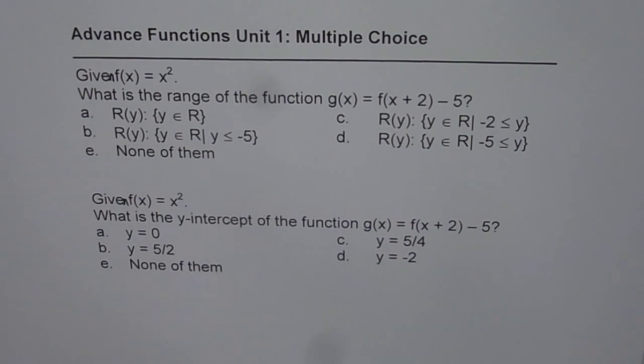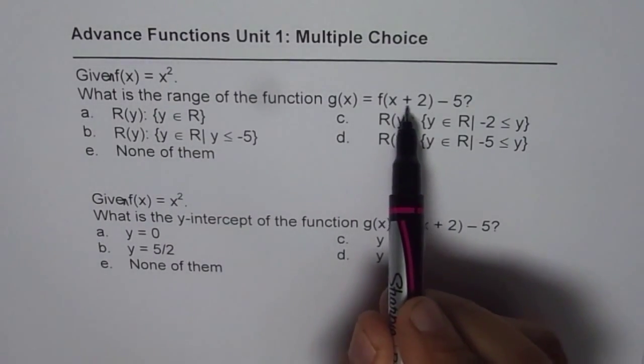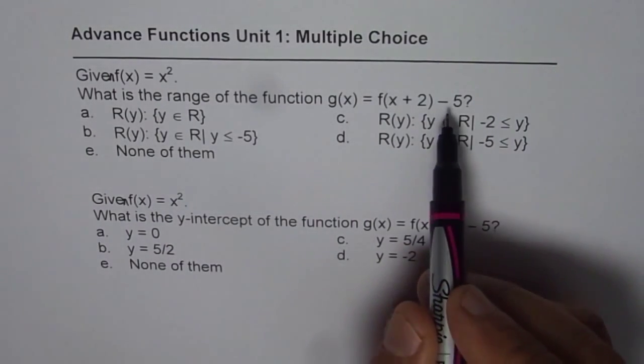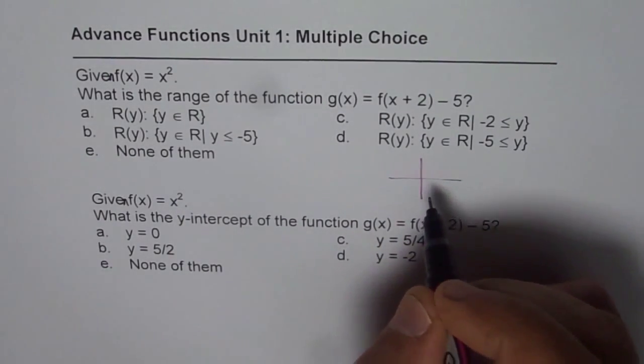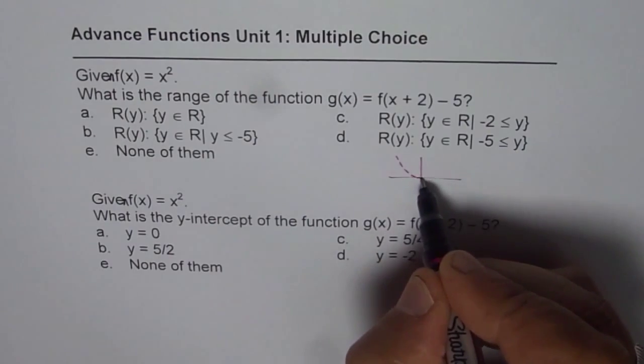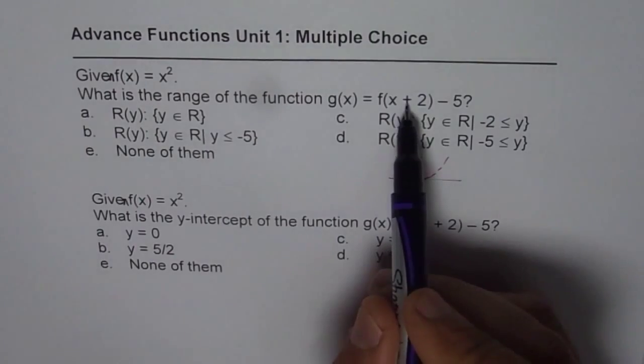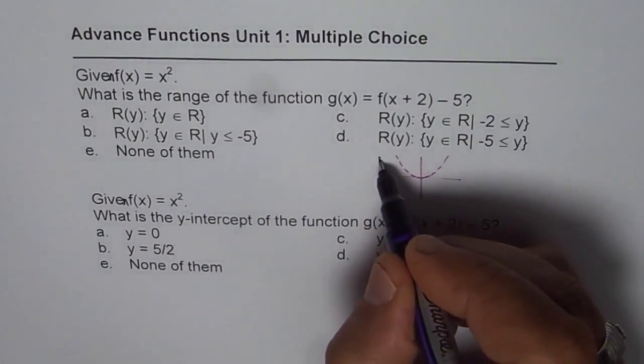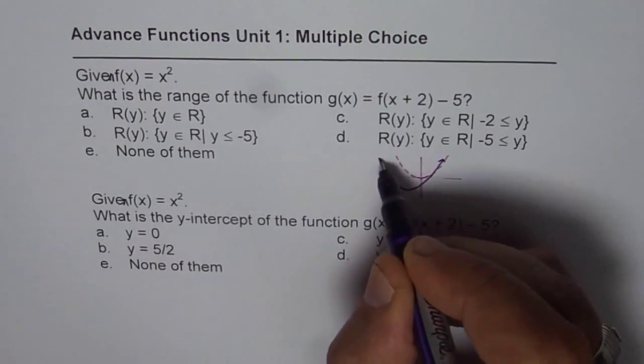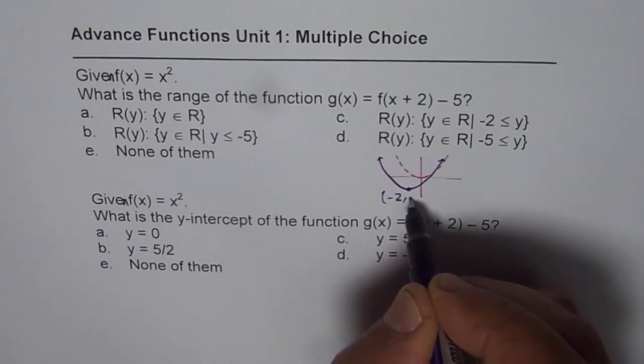So, let us start with the very first one. Here we'll use the transformation. f(x) is x², g(x) is x + 2 minus 5. That means, the function f(x) = x² is like this. And g(x) is translated two units left and five units down. So, it is two units left and five units down, kind of like this, where this point should be (-2, -5).